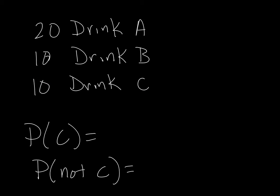So if 20 people have drink A and 10 people have drink B and another 10 people have drink C, I want to know two things. What's the probability that I randomly select a person with drink C? And then I also want the probability that I don't select somebody with drink C.